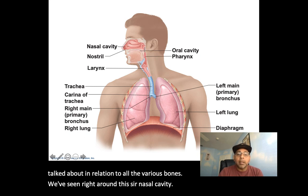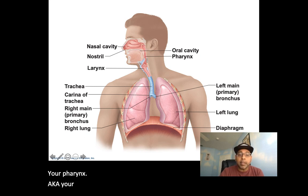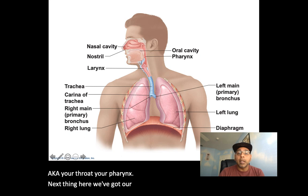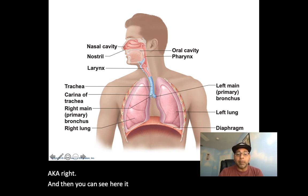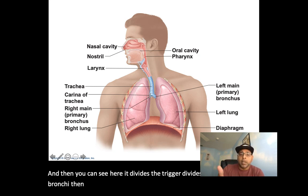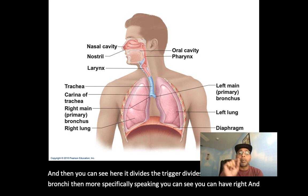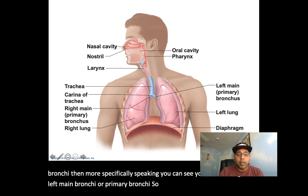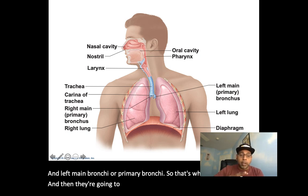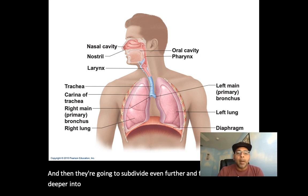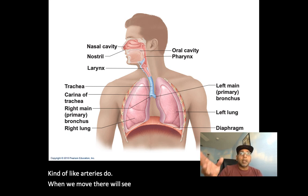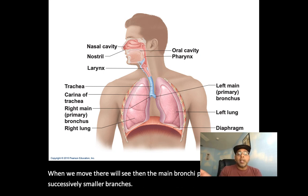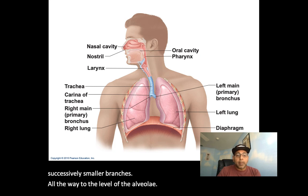Next is your pharynx, also known as your throat. Then we've got the larynx, and then the trachea — our windpipe. The trachea divides into our bronchi, specifically the right and left main bronchi, or primary bronchi. These are going to subdivide further as they move deeper into the lungs, kind of like arteries do — all the way down to the level of the alveoli inside the lungs.